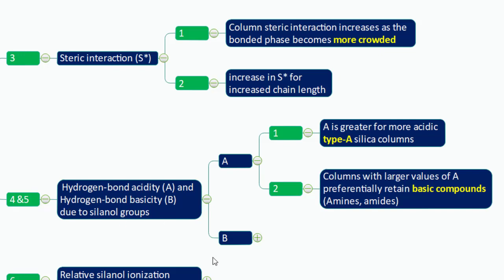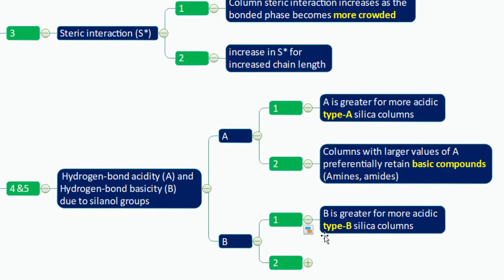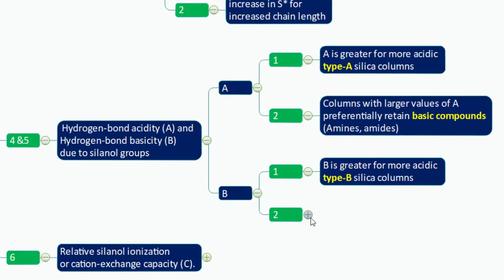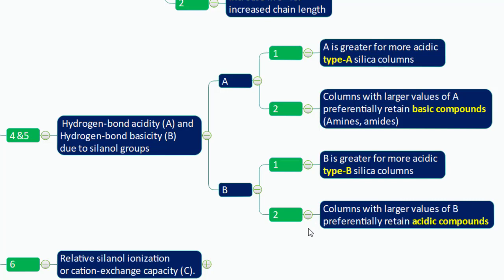Hydrogen bond basicity (B) is greater for Type B silica — the more pure silica used today. Columns with larger B values preferentially retain acidic compounds. So comparing A and B: the A component retains basic compounds for longer, while the B component retains acidic compounds for longer. For compounds with both acidic and basic functional groups, this parameter will significantly define selectivity.